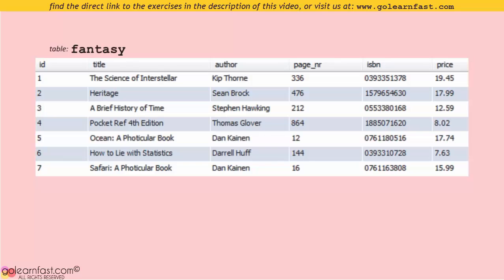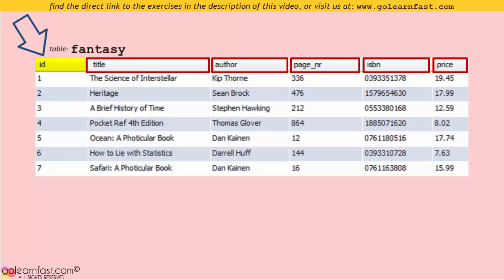Each column represents one attribute of the book, such as title, author, total number of pages, ISBN, and price. You'll learn about the ID column in the next tutorials.